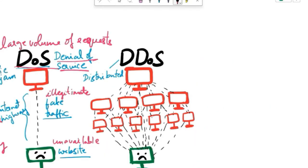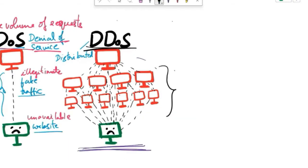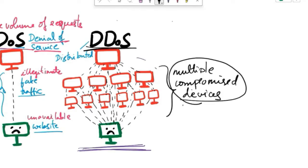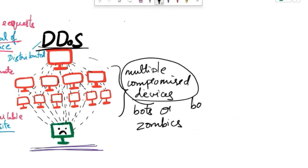DDoS attack is a variant of a DoS attack. In DDoS, multiple compromised devices are used to flood a target with a lot of traffic. These multiple compromised devices are called bots or zombies. These bots or zombies form a network known as a botnet, which is under the control of the attacker.